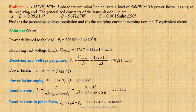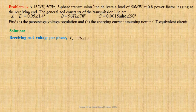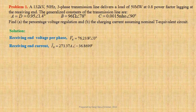Here load current IL is the receiving end current IR. Taking receiving end voltage per phase as reference we can write VR equals 76,210 volts at an angle 0 degree. We have computed receiving end current IR equals 273.37 ampere at an angle minus 36.8699 degree.